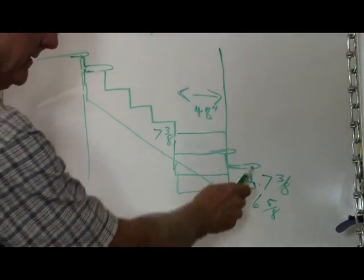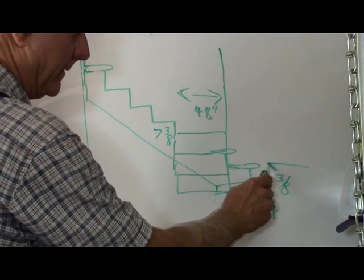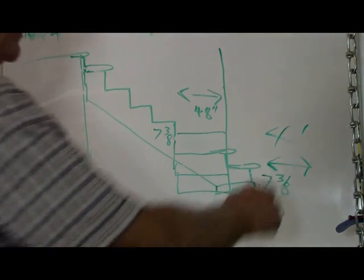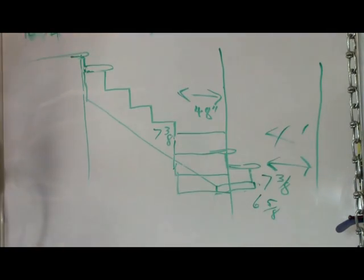So wherever this step is, you want to have at least four foot clearance. And that's so you can get like mattresses, beds, sofas, chairs, whatnot up the stairs.